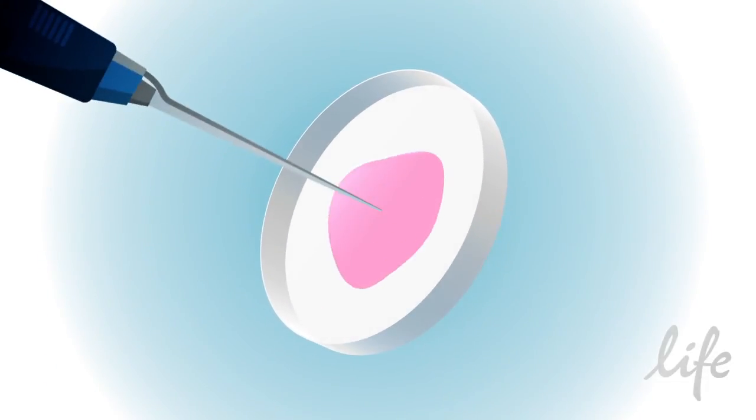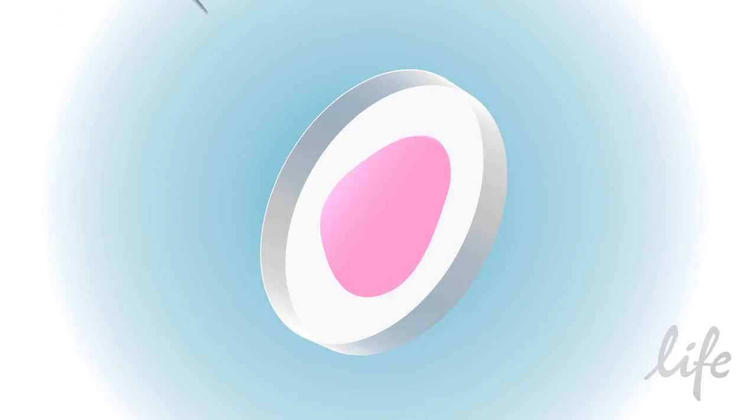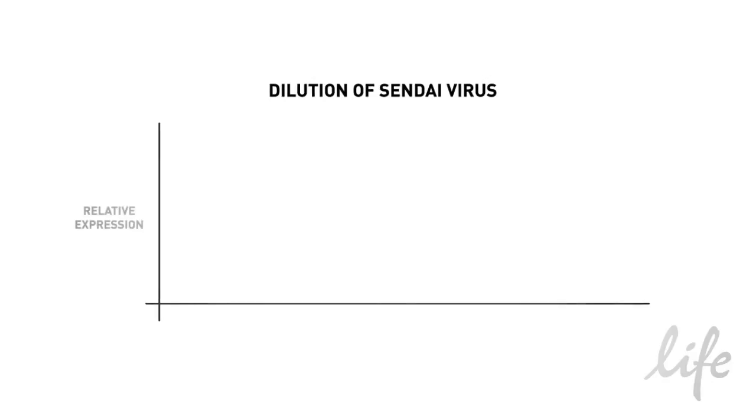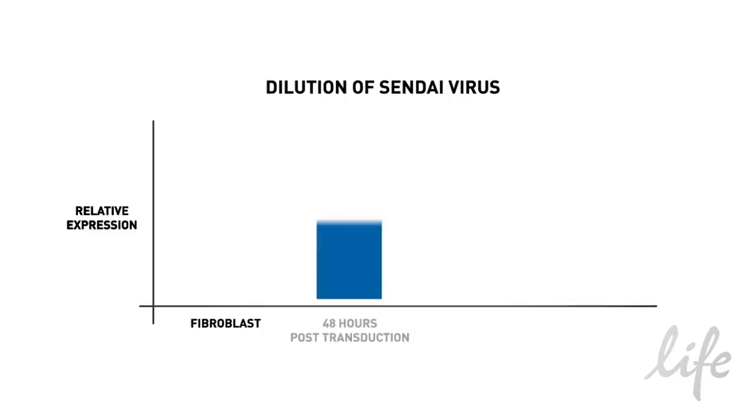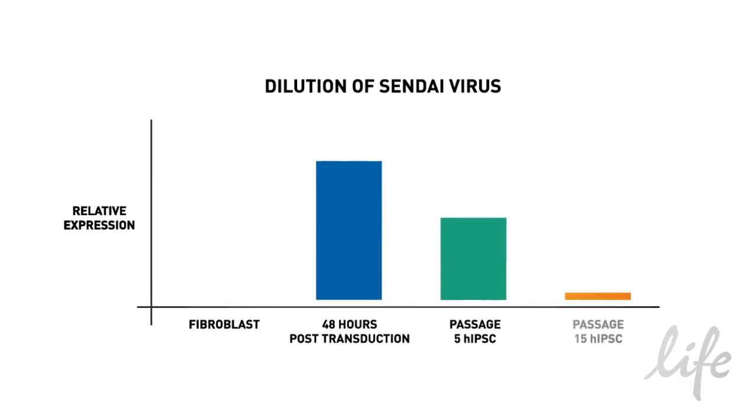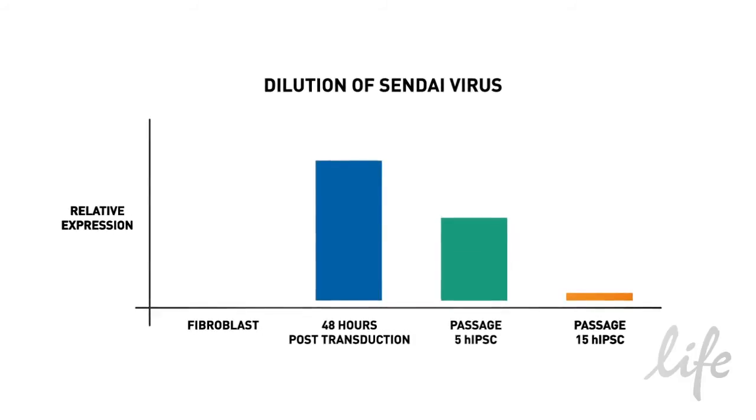These viral vectors are added to the dish of the cells to be reprogrammed, incubated overnight, and the reprogramming process begins. After reprogramming, quantitative PCR testing shows that the Sendai virus does not remain in the iPSCs, allowing you to perform your research with iPSCs that have no genomic integration or viral remnants.